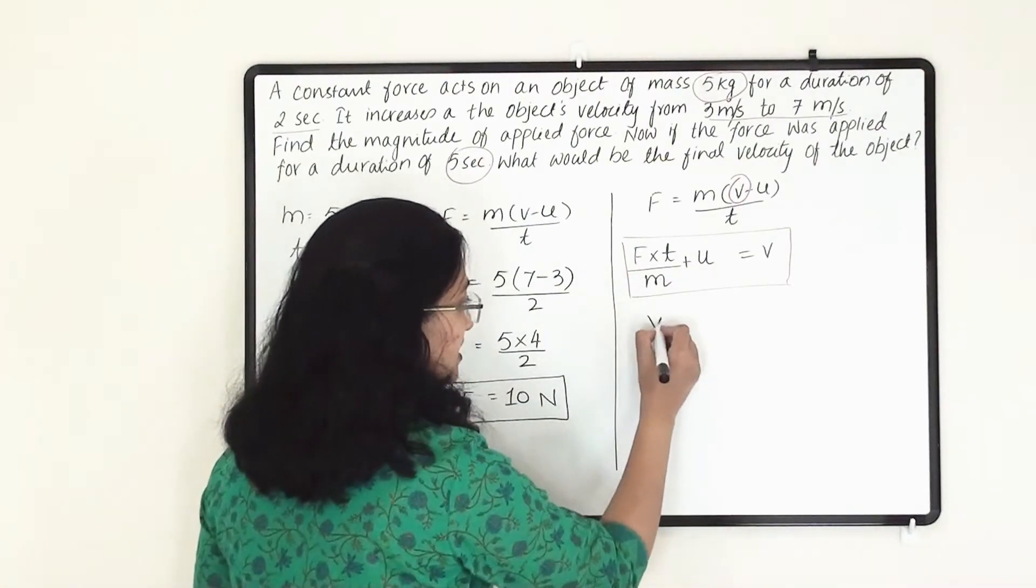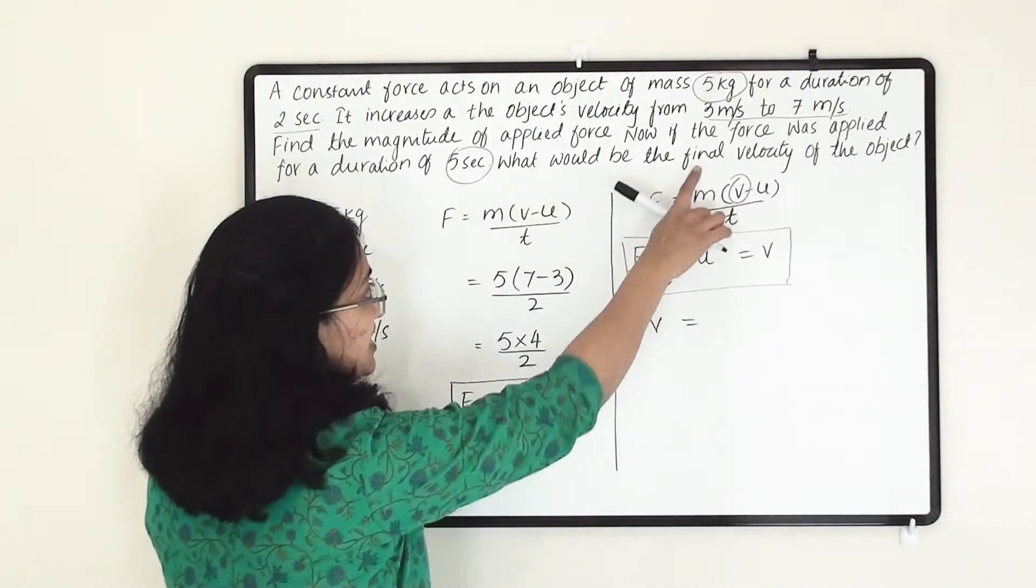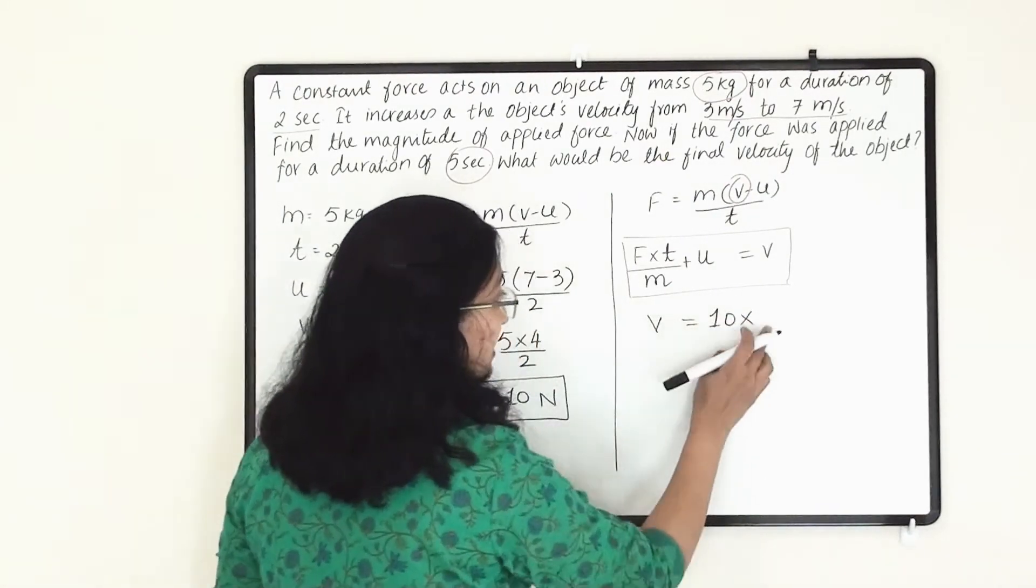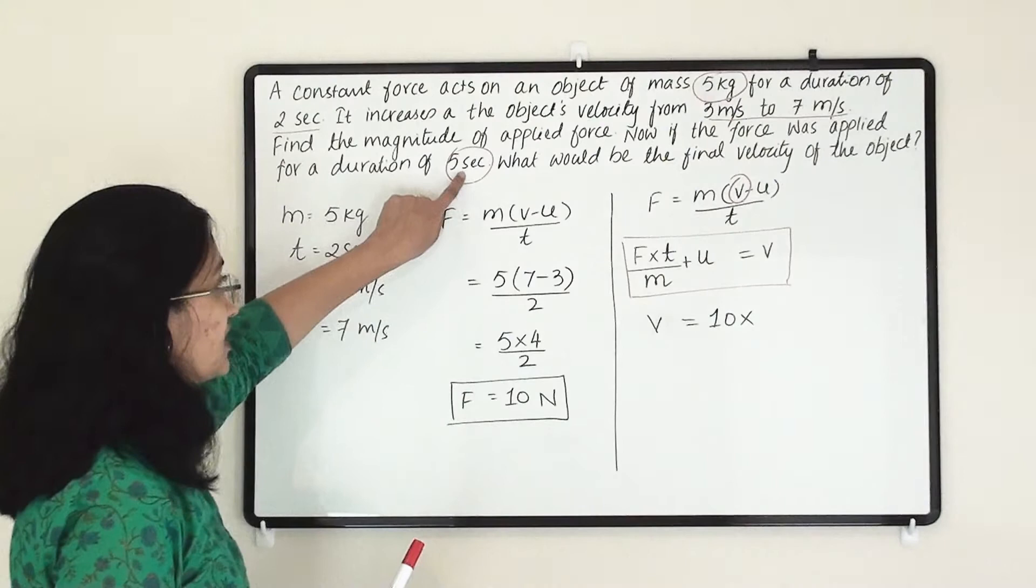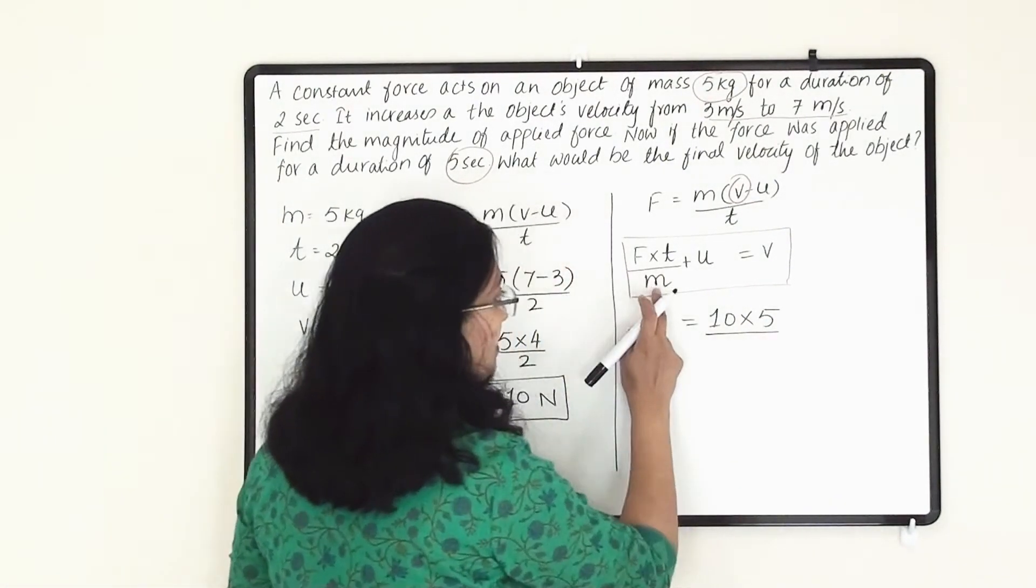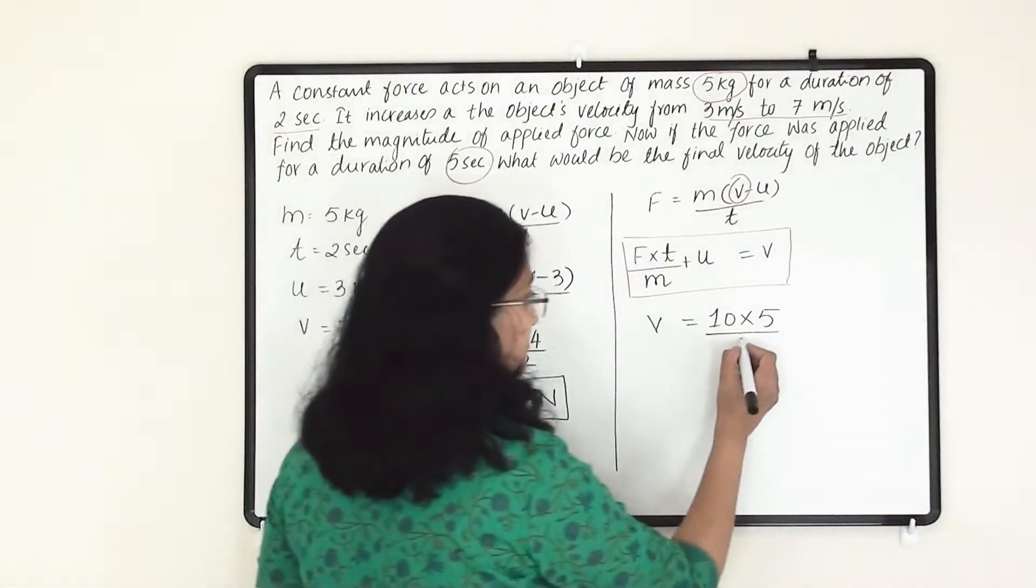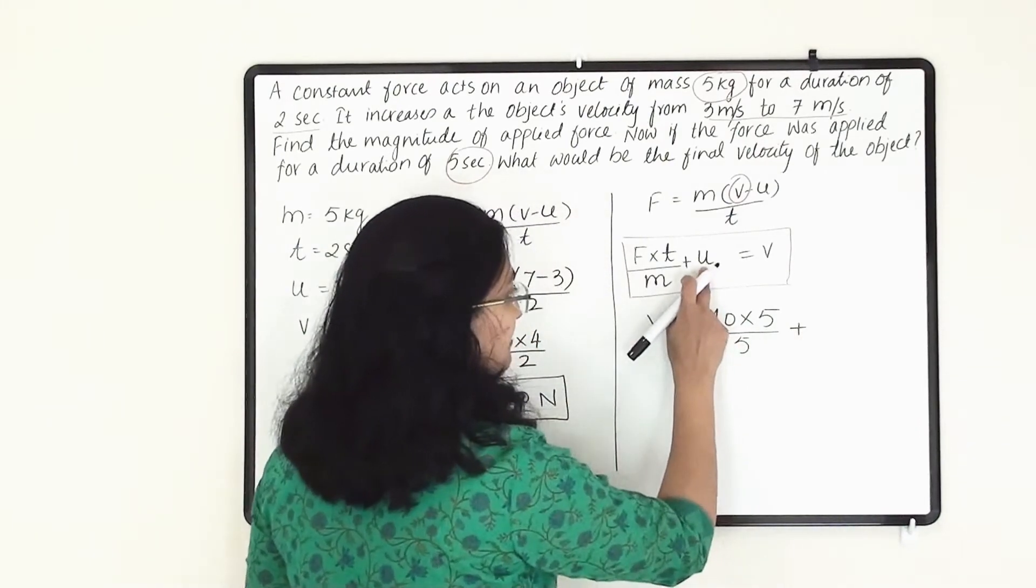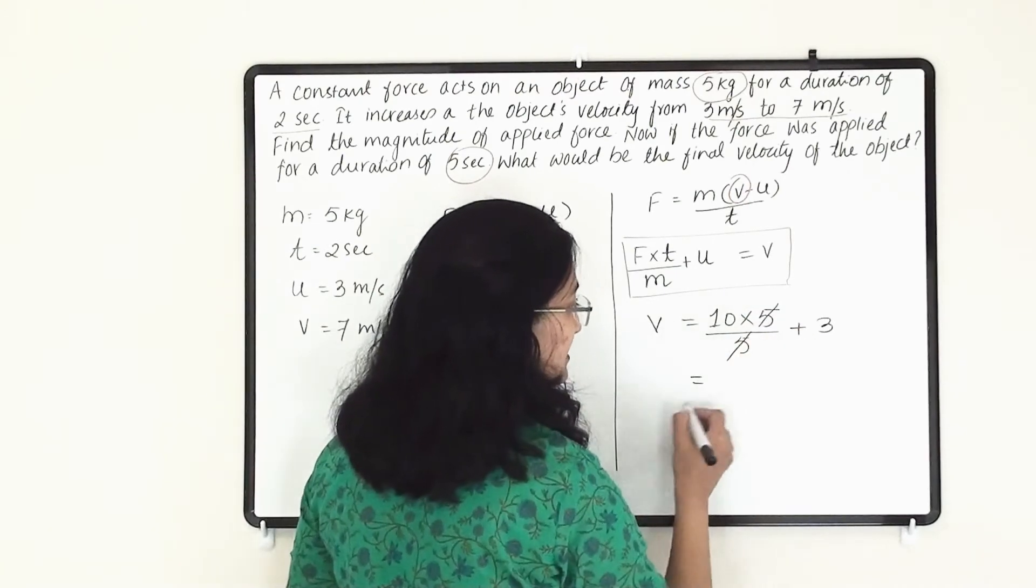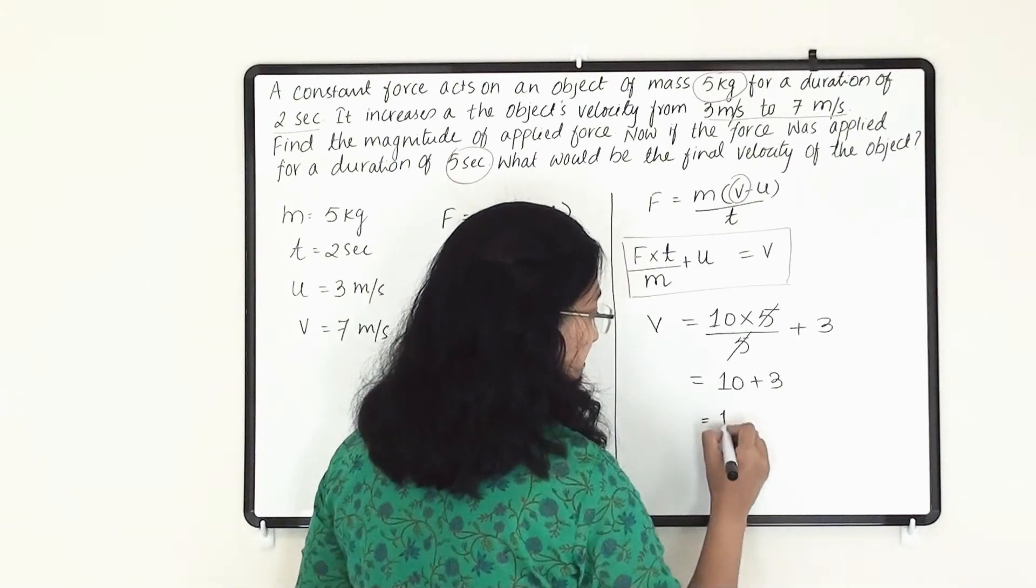Now let us write V equals to force. How much force we have applied? 10 N because they have said that same force we are applying. So 10 into time. Here time we have changed, that is 5 seconds. So here we are going to write 5 divided by M. Mass will remain same, that is 5. And plus initial velocity will also remain same, that is 3. So here 5, 5 we can cancel it out. And we will get 10 plus 3, so that is 13.